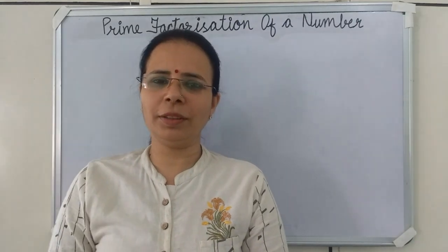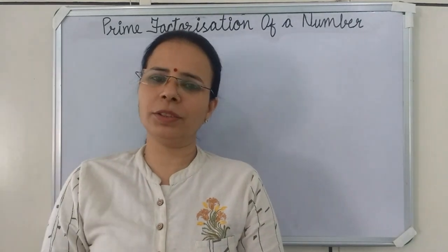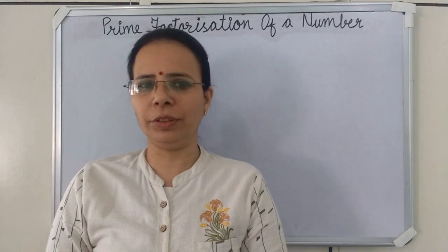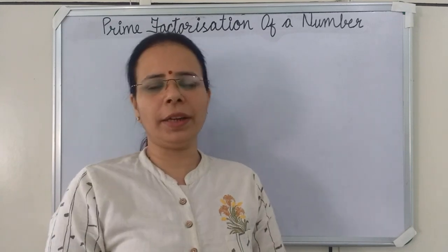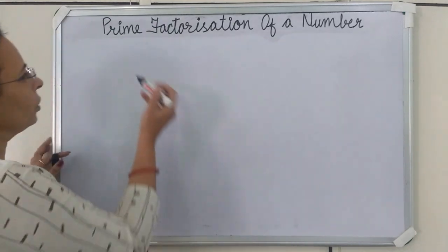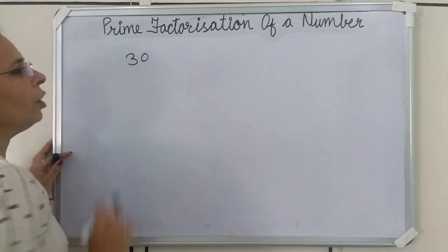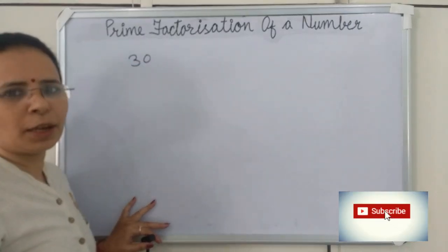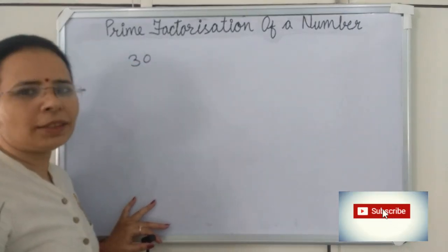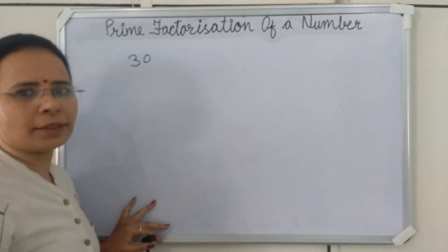Hello kids, today we will learn to find prime factors of a given number using the division method. Let us find prime factors of 30. The first step is to divide the number by the smallest prime number that exactly divides it.